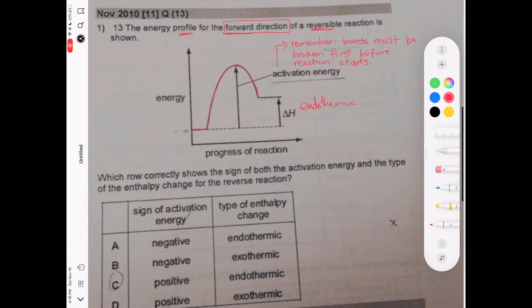You have this activation energy which is always positive because remember bonds must be broken before a reaction starts, so any reaction will require some kind of energy to start. If this energy was a lot and then the energy produced was just a little bit, because it didn't produce a lot of energy when forming bonds, then it will be an endothermic reaction.